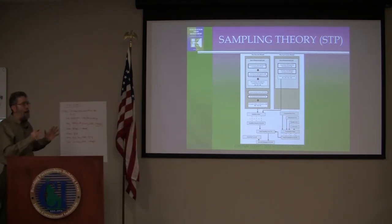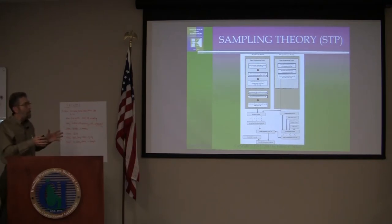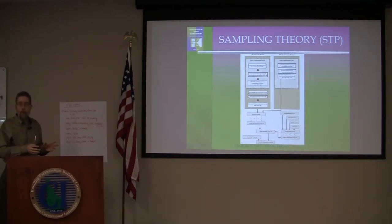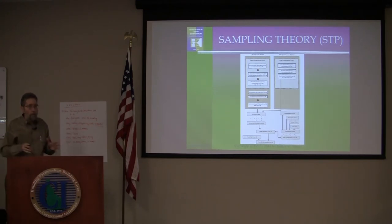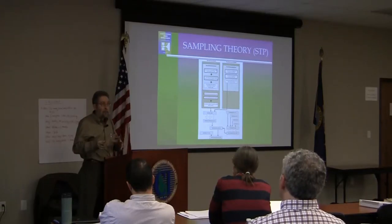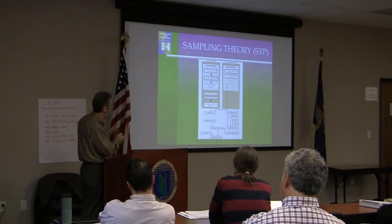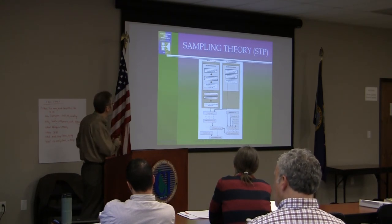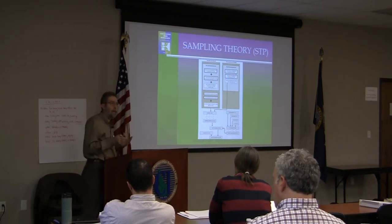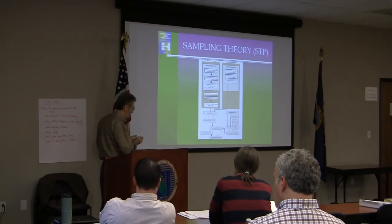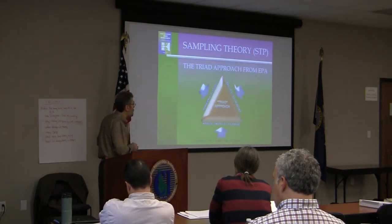So we now have a model — kind of like the DQO seven-step process — another seven-step process. We have a model for tracking where the error could be coming into our sampling program. Those who actually do the sampling, hire people who do field sampling, or who are at the state reviewing sampling programs now have a model to say, 'I wonder how they handle this issue,' or 'I'm not worried about this one for whatever reason.' It helps organize. And there are economic implications to all these things.